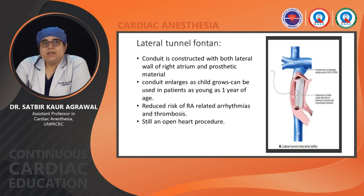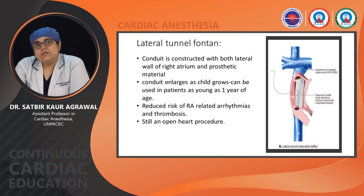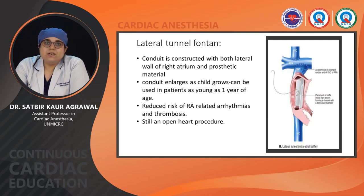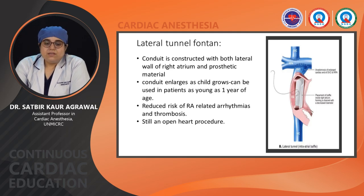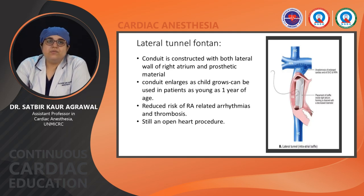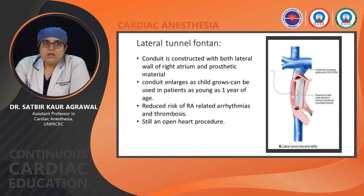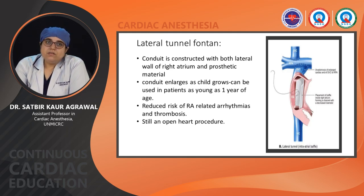About one decade later, the lateral tunnel Fontan was introduced, in which a conduit was constructed using both the lateral wall of the right atrium and prosthetic material. It is still used for some patients. The major advantage is that as the child grows, the conduit enlarges because it has some part of the RA involved — so it can be used for younger patients. It has reduced risk of RA-related arrhythmias and thrombosis, though these risks still exist, and it is an open heart surgery.